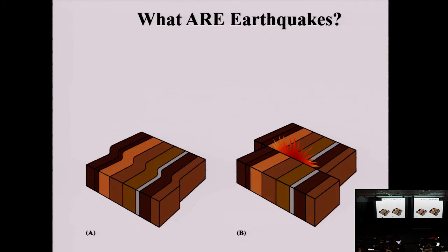What are earthquakes? You can define earthquakes in many different ways. One definition is the elastic failure of rocks—the failure of rocks in an elastic fashion. As you can see in picture A, these rocks are bending. All rocks, when exposed to differential stress, are able to bend. The amount of bending they can have before they break is related to their material properties.